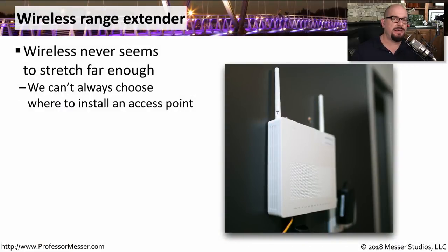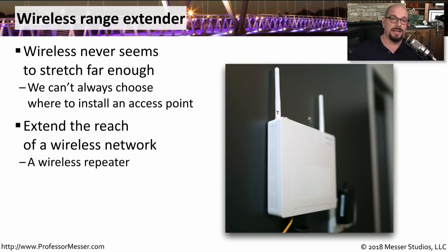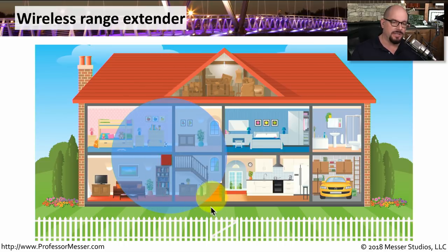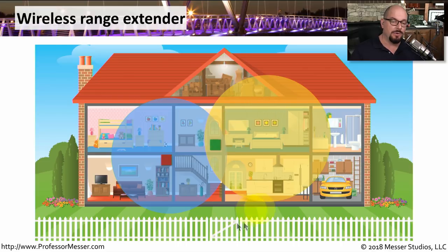Our wireless networks never seem to extend as far as we would like. Sometimes we don't have a choice where we put an access point — there might be a single room with an ethernet connection and that's the only place available. With a wireless range extender, you can increase the size of that wireless network. Think of it as a wireless repeater that receives a wireless signal and repeats it to a local area. For example, if your cable modem connection comes into a family room and covers only part of the house, you can install a wireless range extender in the middle — such as a hallway upstairs — to extend the signal and cover areas like the kitchen and master bedroom.